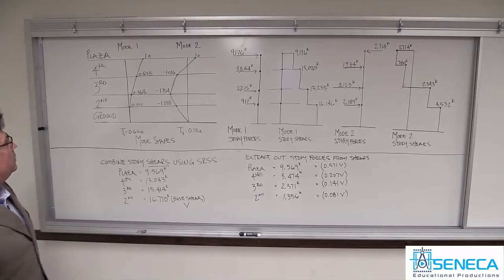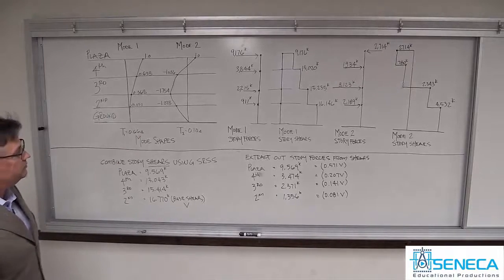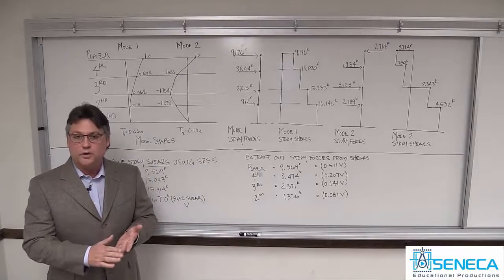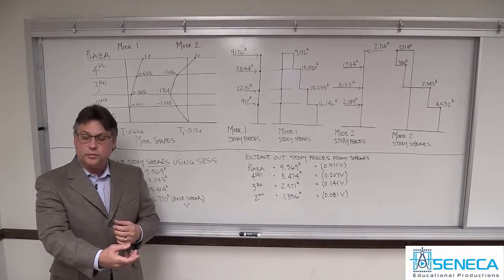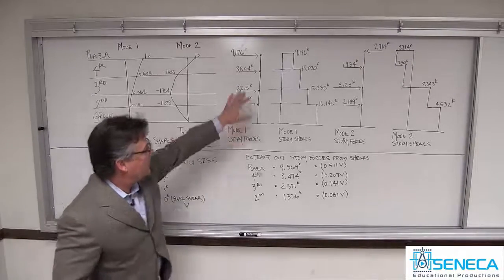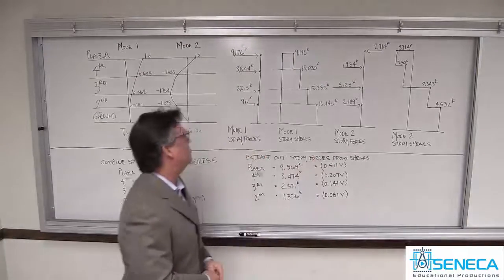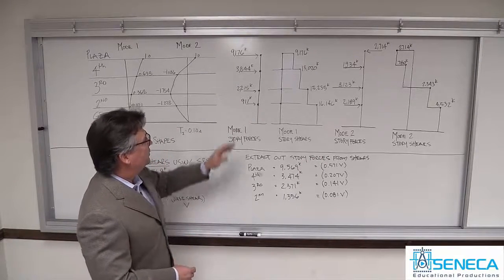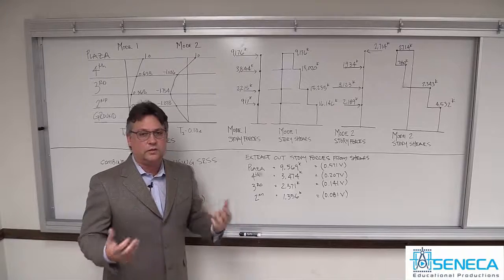So let's walk through what a designer does once the computer gives them mode shapes. You will come up with a participation factor for each mode, and through that you will also go to the site-specific response spectra, pull out an acceleration value for that single degree of freedom system, and come up with story forces for mode one. You do the same thing for mode two. These are the mode one story forces in this example. This is completely elastic behavior — it doesn't include an R value, the ductility factor, and it doesn't include scaling. This is just the pure response spectrum elastic set of forces.